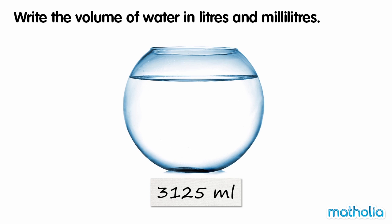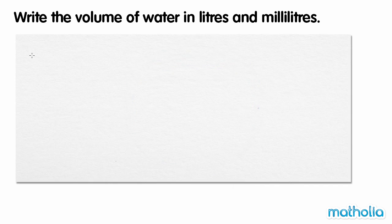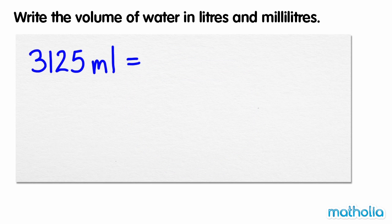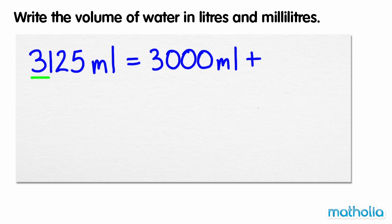Write the volume of water in litres and millilitres. The fish bowl contains 3,125 millilitres of water. We can rewrite 3,125 millilitres as 3,000 millilitres plus 125 millilitres.